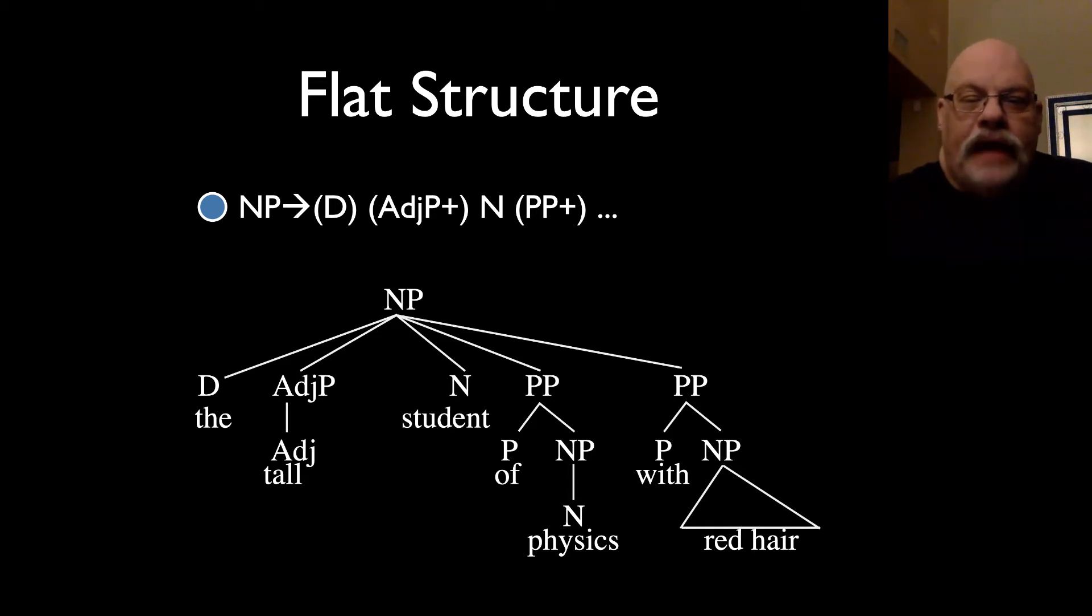We call this a flat structure because the head noun student is on the same level in effect that it's dominated by a noun phrase that dominates all of its modifiers. So all of its modifiers are on the same level. They're all sisters, which in fact is what is predicted by the principle of modification.